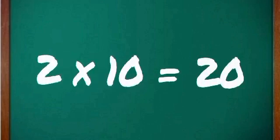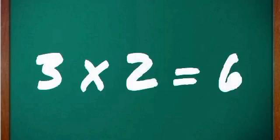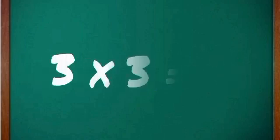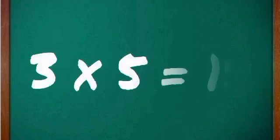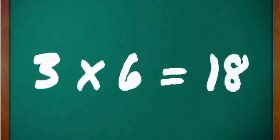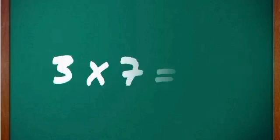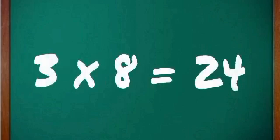2 ten's a 20. Okay, now 3. 3 one's a 3, 3 two's a 6, 3 three's a 9, 3 four's a 12, 3 five's a 15, 3 six's a 18, 3 seven's a 21, 3 eight's a 24, 3 nine's a 27.